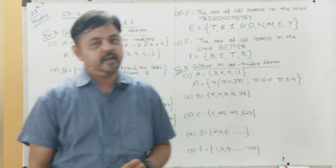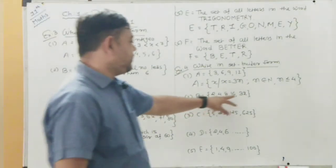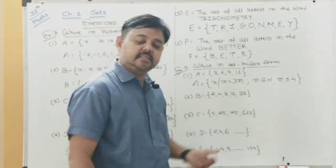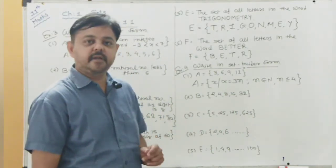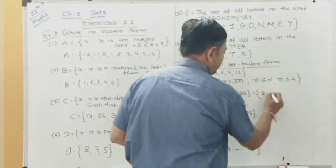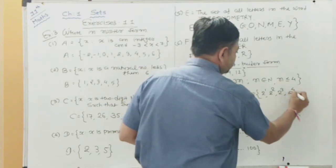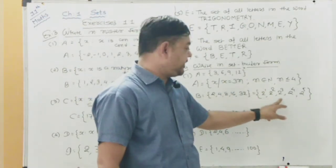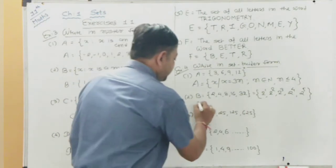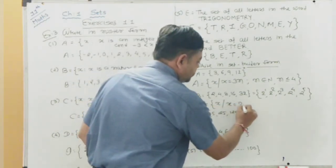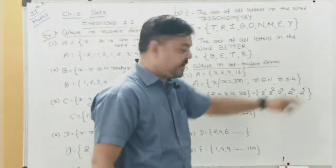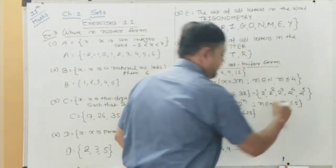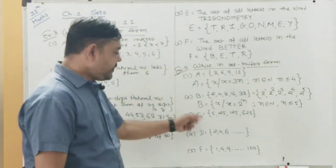Set B = {2, 4, 8, 16, 32}. Notice this is not a table of 2 or multiples of 2 — it is powers of 2. Two raised to 1, 2 squared, 2 cubed, 2 to the 4th, 2 to the 5th. So Set B = {x : x = 2^n, n ∈ N and n ≤ 5}.